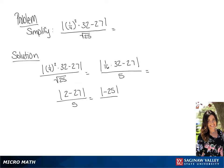We have the absolute value of negative 25 over 5, so we get 25 over 5, which then can be simplified to 5.